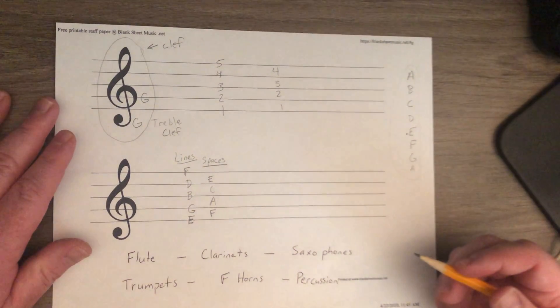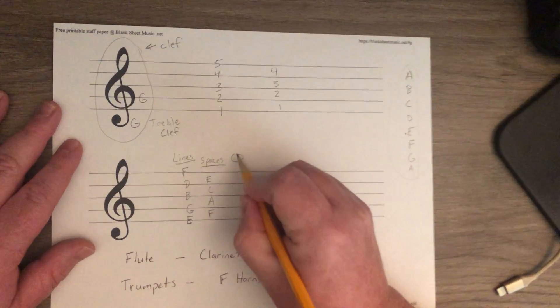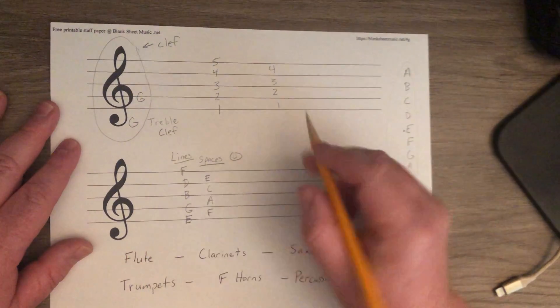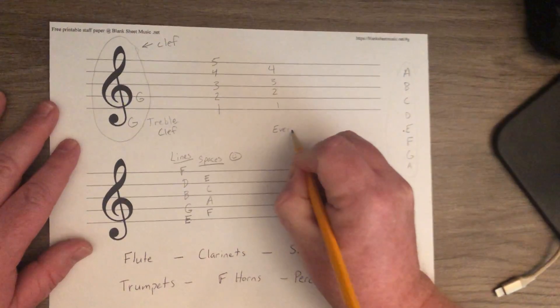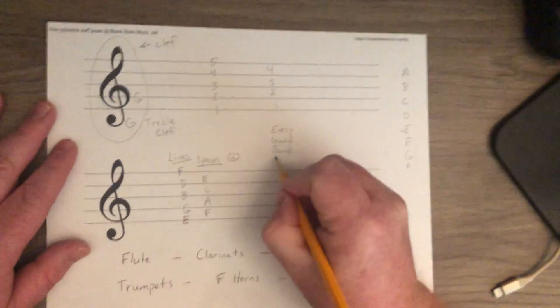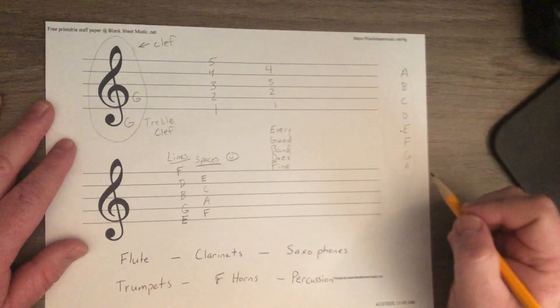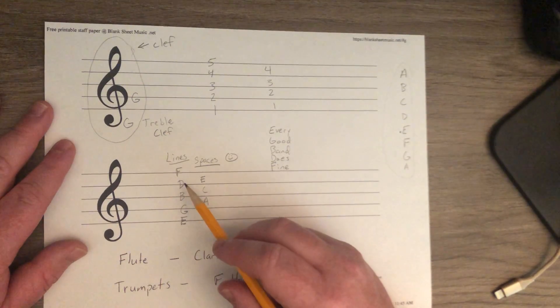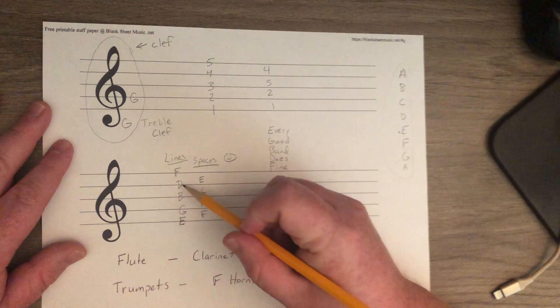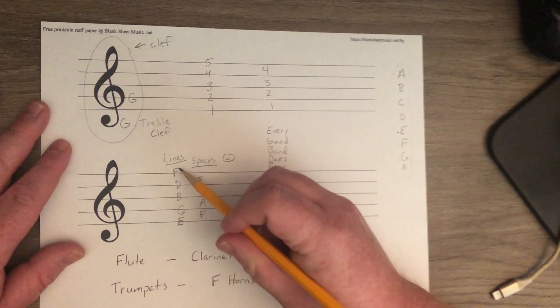And I've come up with a couple little mnemonic devices to help you remember what these are. For spaces, it's easy. It's face. So, for spaces, you've got a nice little happy face going on. F, A, C, E. For your lines, remember, start at the bottom. We've got every, for E. Good, for G. Band, for B. Does, D-O-E-S. And then, fine. F-I-N-E. Every good band does fine. A couple other ways, if you want to remember it like this. Every good boy deserves fudge. Or, every good boy does fine.